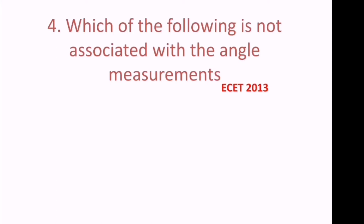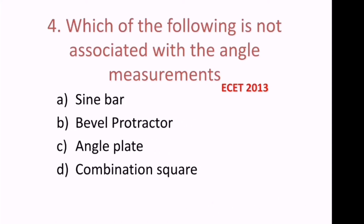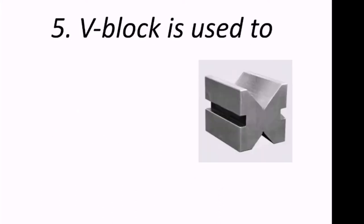Fourth question: Which of the following is not associated with angle measurements? This question was asked in the 2013 ESET exam. The options are sine bar, bevel protractor, angle plate, and combination square. Out of these, the bevel protractor is the option that is not associated with angle measurements in this context — B is the correct answer.